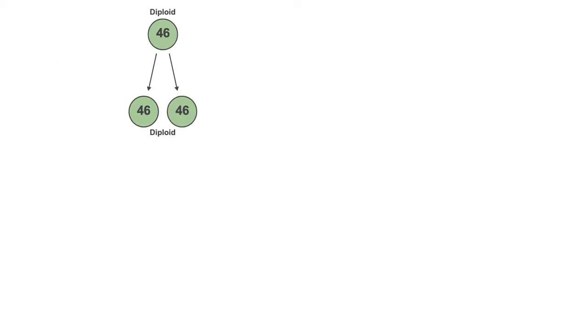As you can see from the image, in mitotic cell division, a diploid cell with 46 chromosomes produces two cells with the same number of chromosomes. Therefore, mitosis serves to produce new body cells like skin cells to replace the old ones.